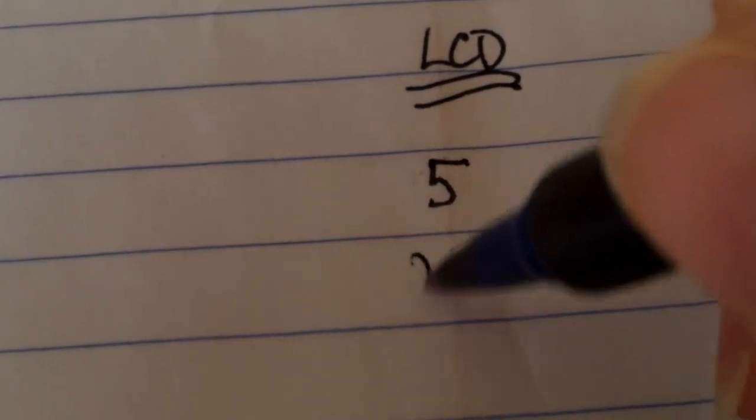So over here, I'm going to go through and actually do my little common denominator figuring out. 5 is a done deal, that's already factored. 10 is 2 times 5, and 15 is 3 times 5.